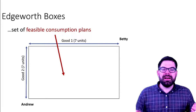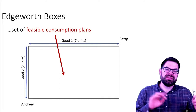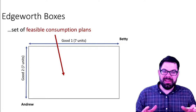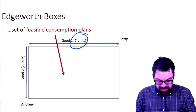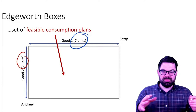We have two people, Andrew and Betty, each owning a certain number of goods. Andrew owns five units of good one and one unit of good two; Betty owns two units of good one and six units of good two. If we think of Andrew and Betty as constituting an economy, then overall there are seven units of good one and seven units of good two in this economy. The Edgeworth box tells us all the feasible consumption plans.